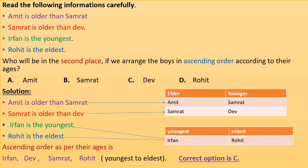Now Irfan is the youngest and Rohit is the eldest. So according to their ages, the ascending order will be: since Irfan is the youngest, Irfan will come first. From table 1 we conclude that Dev is the youngest among Amit and Samrat, so second will be Dev.